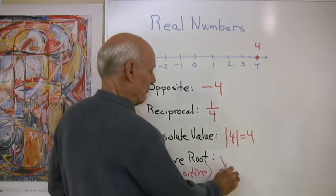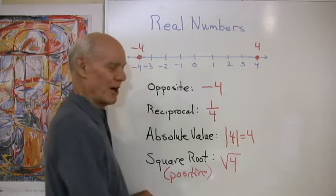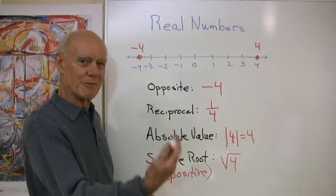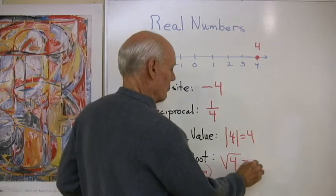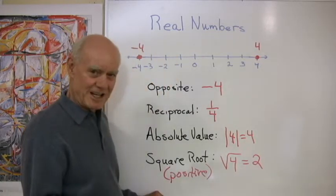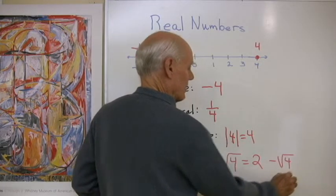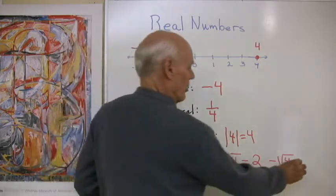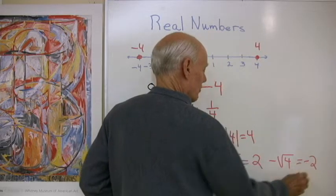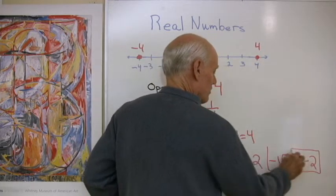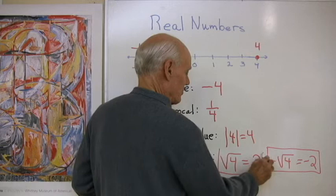So this positive square root of four looks like this. Positive square root of four is the positive number we square to get four, which is two. If I wanted the negative square root of four, I would say this. I would put the negative sign in front of it, and then you would know that I meant negative two. So that's the negative square root of four. This is the positive square root of four.